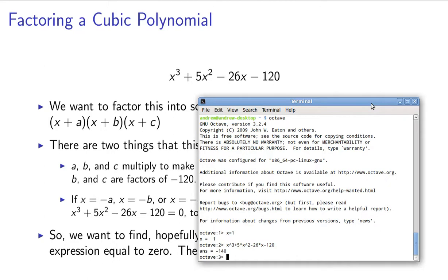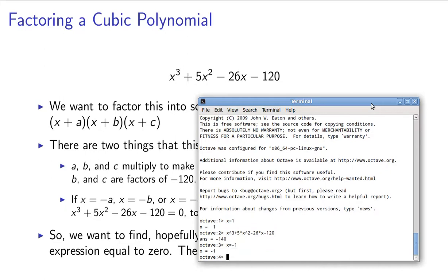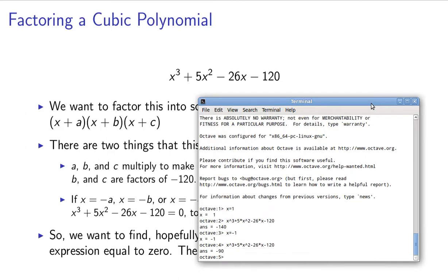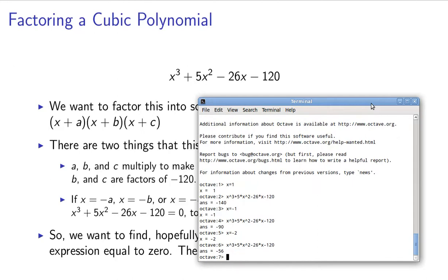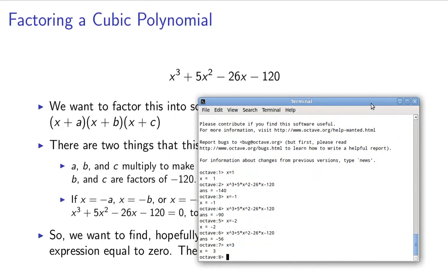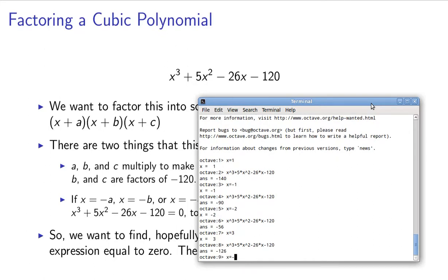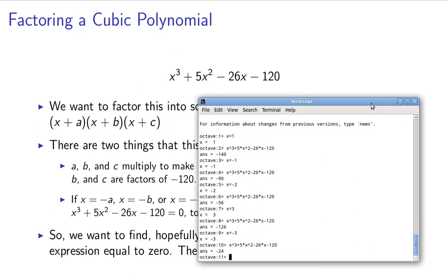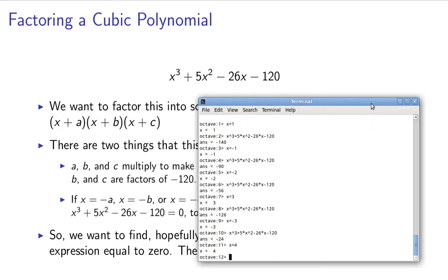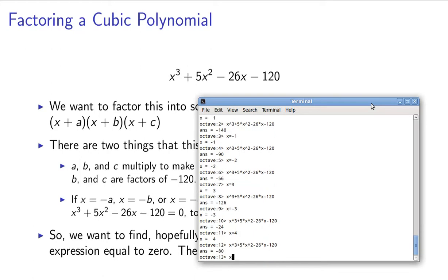So let's look at factors of 120. Well, first I'll try 1. Now I'm putting in X equals 1, and I'm going to try X cubed plus 5 times X squared minus 26 times X minus 120. So when X equals 1, the entire expression is negative 140. And you can see what I had to be tedious to do by hand. But that means that X equals 1, 1 is not a root of the expression. So X minus 1 is not something we could factor out. So let's try when X equals negative 1. That gives us negative 90. So that doesn't work. X equals negative 2 is also a factor of 120, and that doesn't work either. 3 is also a factor, but that gives us negative 126. So negative 3, negative 4, negative 24, so that doesn't work. So let's try X equals 4.